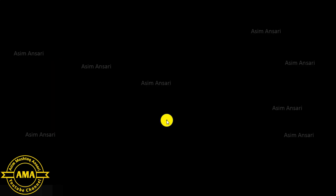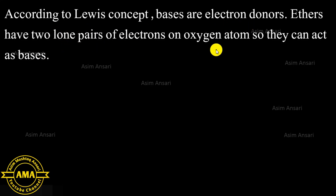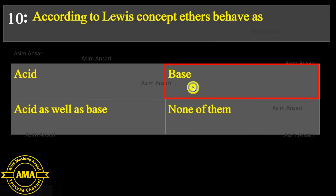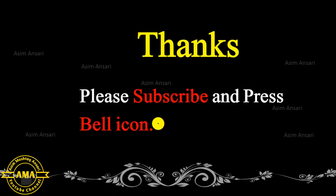Next MCQ: According to the Lewis concept, ethers behave as — acid, base, acid as well as base, or none of them? According to the Lewis concept, bases are electron donors. Ethers have two lone pairs of electrons on the oxygen atom, so they can act as a base. The exact answer is base.